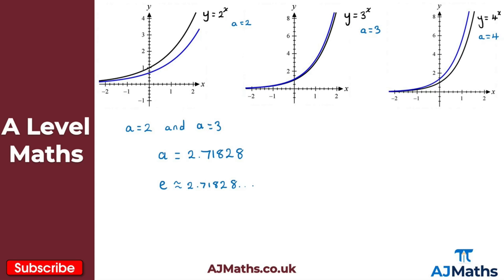So we have y = e to the power of x, which is a special exponential function. When a is equal to e — approximately 2.71828 — the gradient function will always equal the original function. If you were to sketch y = e^x and also sketch the derivative dy/dx, you'd have the blue curve sitting exactly on top of the black curve. That's the special property of a being equal to e.